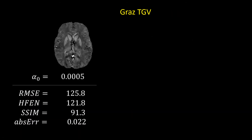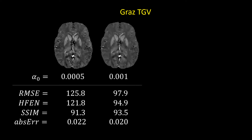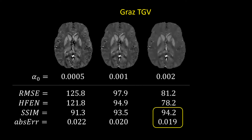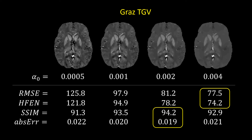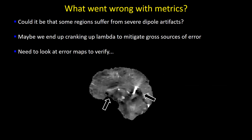We noted that most of the winners suffered from over-smoothing and the reconstructed maps were relatively blurred. Using the GRASS-TGV technique, we started increasing the regularization parameter and found that already at a point where images looked too smooth, we obtained the best SSIM and ROI accuracy metrics. To get even better RMSE and HFEN scores, we had to further increase this parameter, leading to an over-regularized solution. Clearly, these metrics favored over-smooth solutions — likely because some regions suffer from severe dipole artifacts contributing heavily to the error metric, causing us to crank up regularization. We may need to look into error maps to better understand this effect.